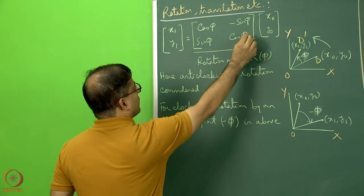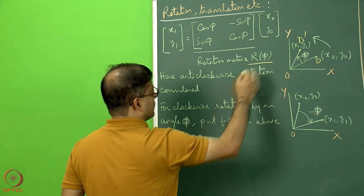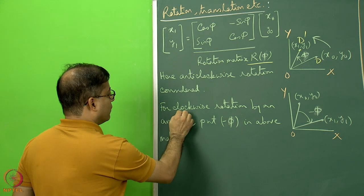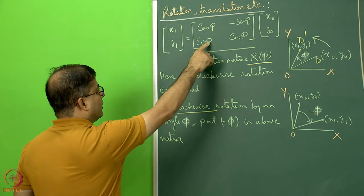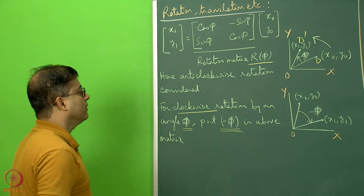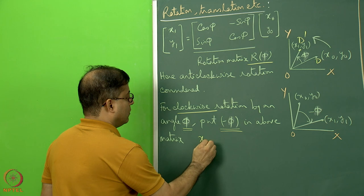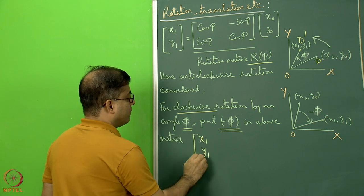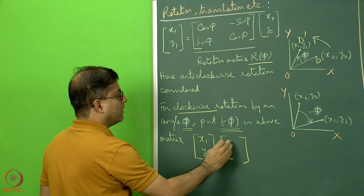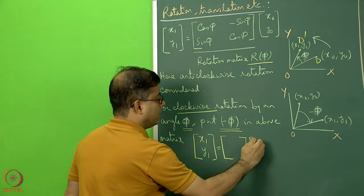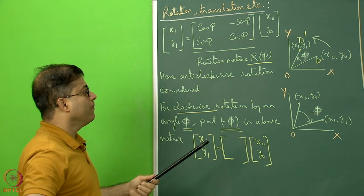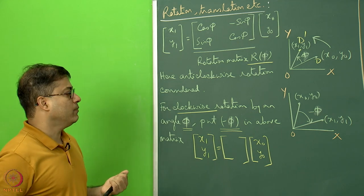This gives the rotation matrix: cos phi, -sin phi / sin phi, cos phi — this 2×2 matrix is called the rotational matrix, represented by R(phi). For clockwise rotation, substitute minus phi for phi in the formula. Students should write the matrix equation x1, y1 = R(-phi) * [x0, y0]. Be careful — this formula is for anti-clockwise rotation.